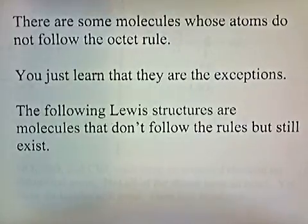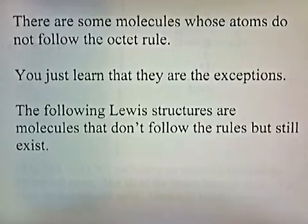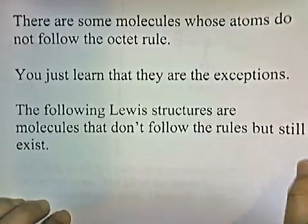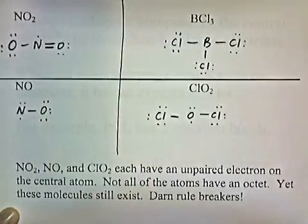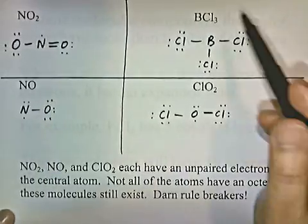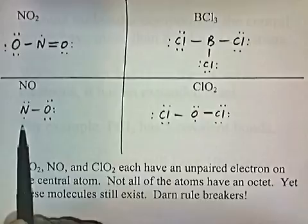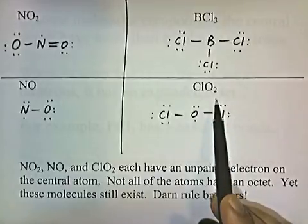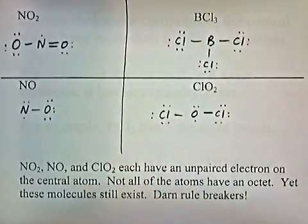Some molecules whose atoms don't follow the octet rule exist — you just learn they're exceptions. For example, NO2 has an unshared single electron on the central atom. BCl3 has boron without a full octet. Nitrous oxide and ClO2 also have unpaired electrons on the central atom. NO2, NO, and ClO2 each have an unpaired electron on the central atom, and yet these molecules still exist.